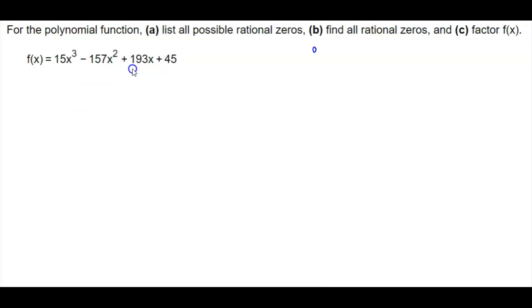For part A, we need to determine what p is and what q is. Well, p is 45, so that's plus or minus 45. For q, it's 15, so it's plus or minus 15.